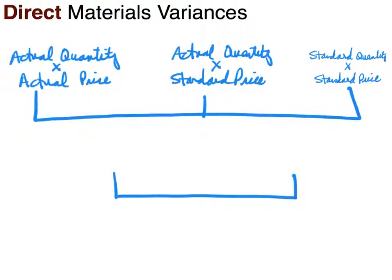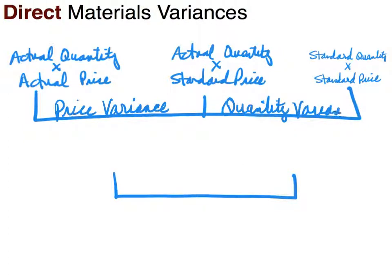The difference in pegs one and two is what we call a price variance. The difference in pegs two and three is a quantity variance. And down at the bottom, the secondary little diagram, this is called our flexible budget variance.